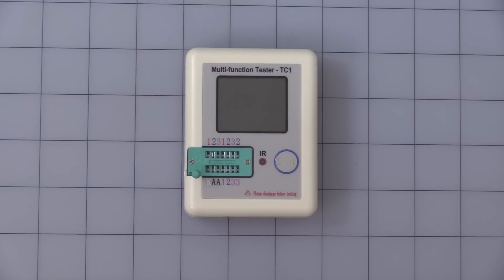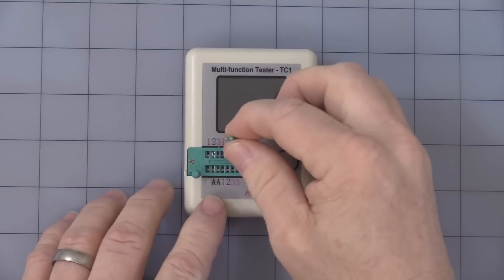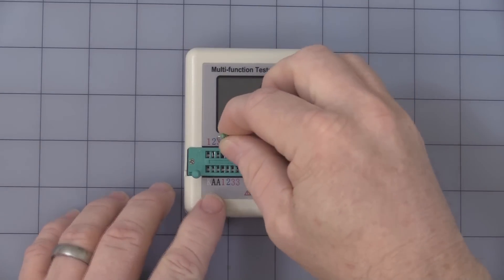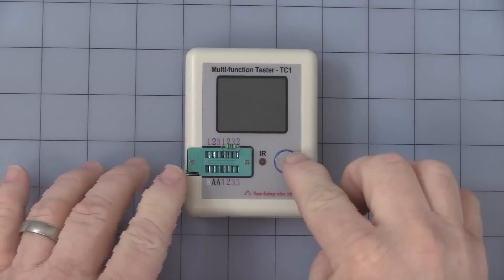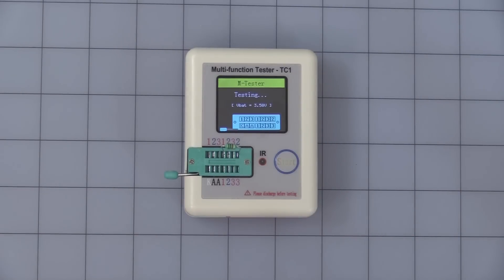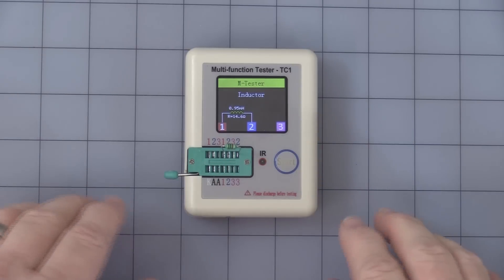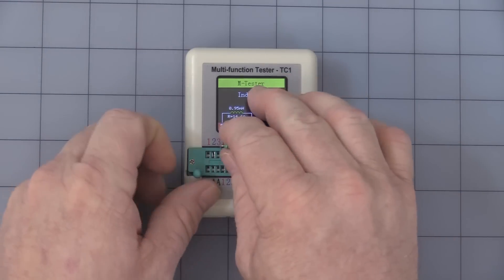The first component I would like to test is one millihenry, an inductor. Let's go ahead and stick it in there, close it, press the button, goes into test mode, and it measures 0.95 millihenries. So it's pretty close. It's got a silver stripe, which is about 10 percent accuracy.